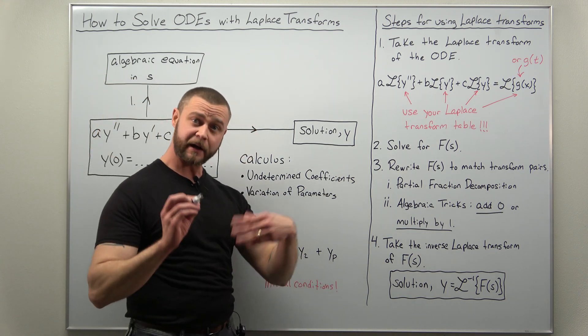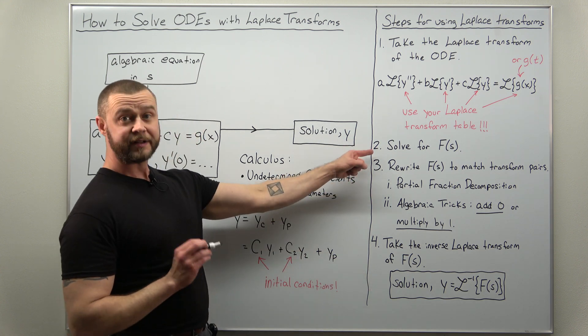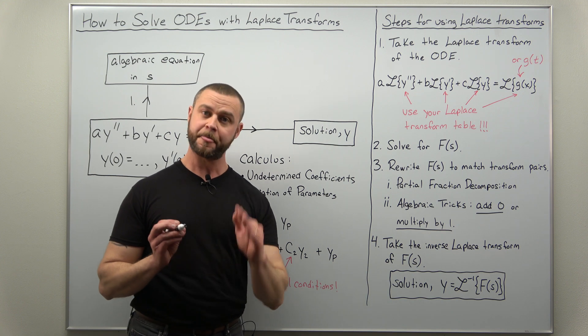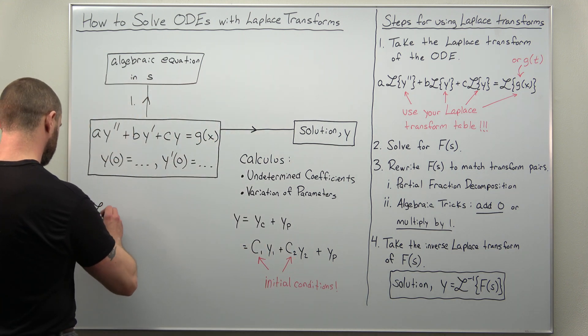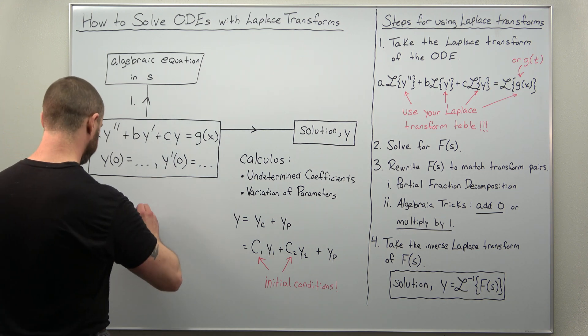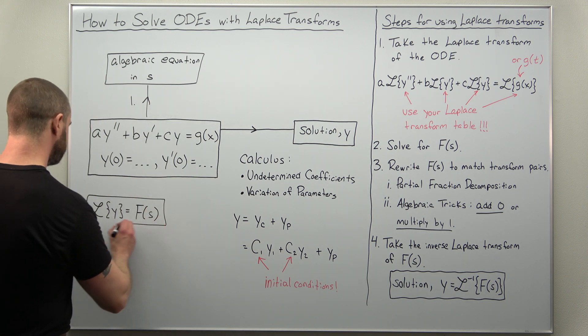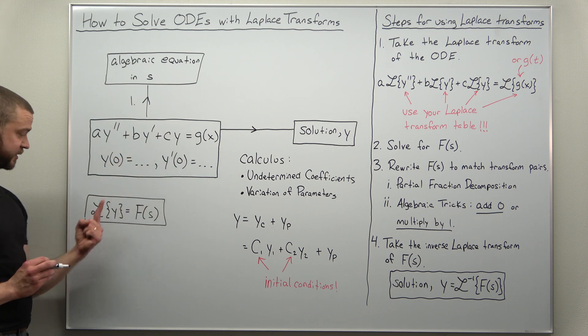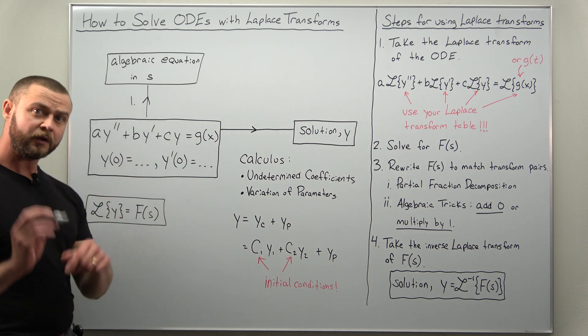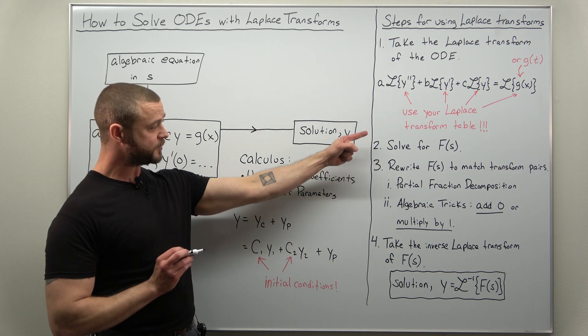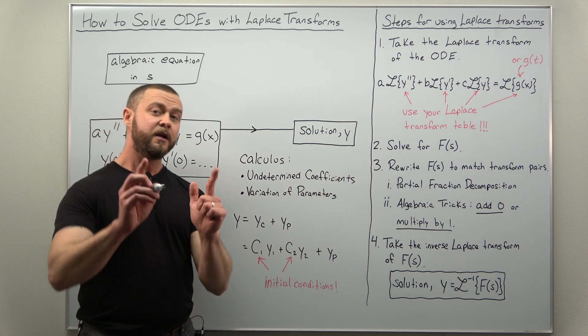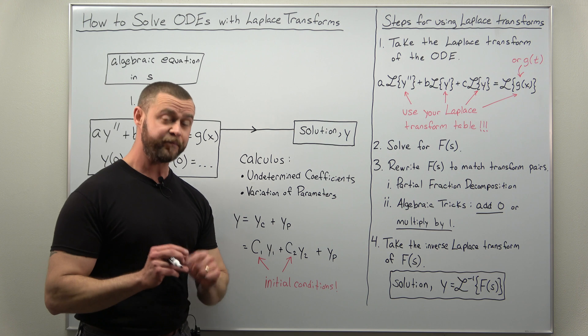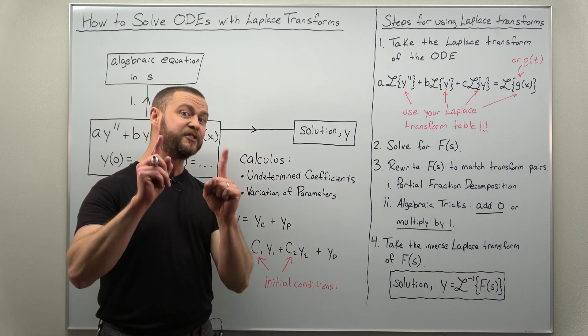Now steps two and three kind of go together. That's all your algebra. You're going to take that algebraic equation in s, and first you're going to solve it for f of s, or capital F of s, where we're using that, that's the Laplace transform of our function y. So just make sure you're comfortable with the notation. Different professors, different courses use different notation, but we would say here the Laplace transform of the y, or function referenced here, that's what we're calling capital F of s. So steps two and three go together: solve for F of s, and then this is where almost all your work is. You're going to use algebraic techniques like partial fraction decomposition and algebraic tricks linked below to rewrite your F of s in terms of transformation pairs in your table.